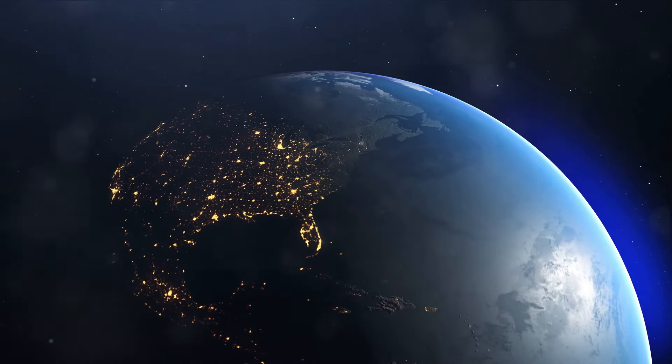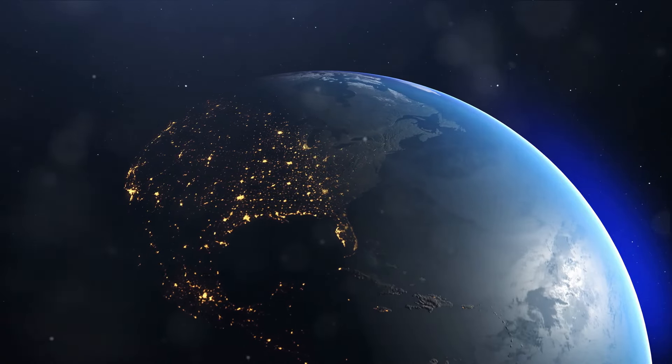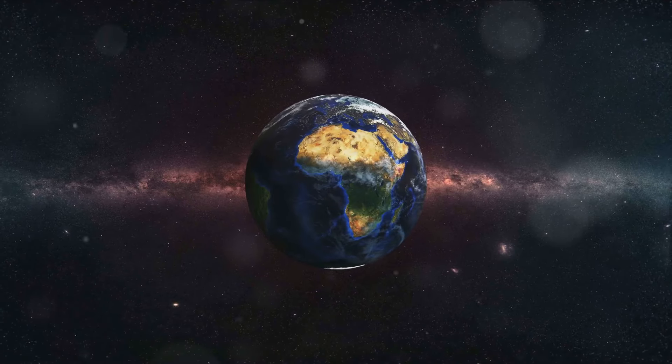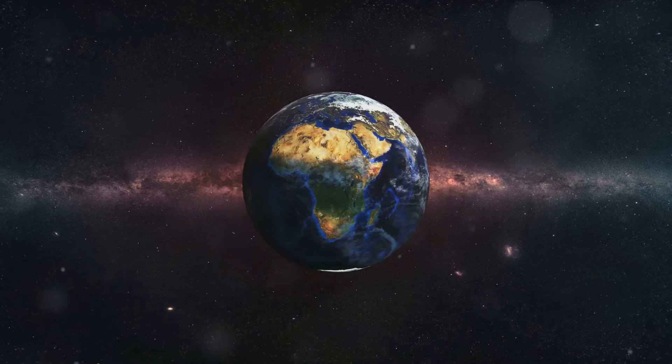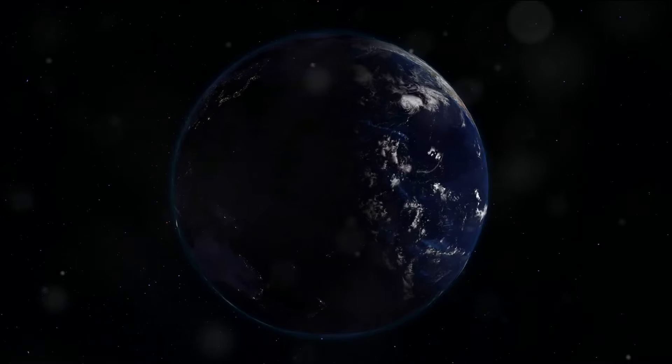But why does Earth rotate, you ask? It's a momentum story that dates back about four and a half billion years when our solar system was just a swirling cloud of gas and dust. As this cloud contracted under gravity, it began to spin, and voila! Earth started its never-ending twirl.